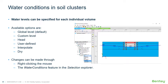The interpolate option interpolates vertically to the water pressure below that volume. We also have a dry option to set the specific volume to dry — for instance in a deep excavation scenario where you want dry excavation inside, so we set the water pressures inside the excavation to dry. We can make these changes by right-clicking on the volume; a pop-up window will appear with the options to change. We can also select the volume and go to the water conditions option in the selection explorer.